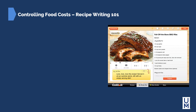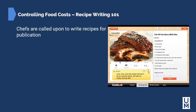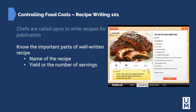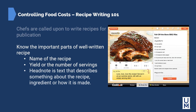In recipe writing — Recipe Writing 101 — chefs are called upon to write recipes for any number of publications, whether magazines, books, or a high school fundraising cookbook. The important parts of a well-written recipe include: the name of the recipe, which is your marketing — 'fall off the bone barbecue ribs' must actually be fall-off-the-bone or it's mismarketing; the yield or number of servings; and the head note, a text that describes something about the recipe, how it's made, or even a quote from a favorite customer.